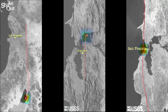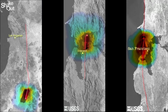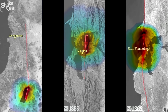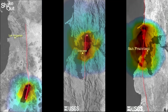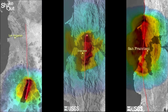One of our goals as seismologists is to characterize earthquake hazards. To do this, we make simulations of expected ground shaking for various earthquake magnitudes. In order to make these simulations, we need to know a few things about the earthquake and the surrounding geology.